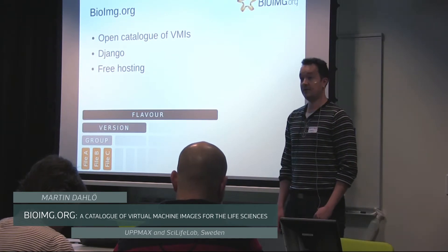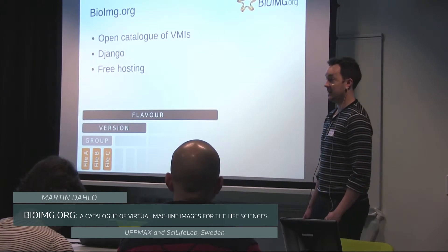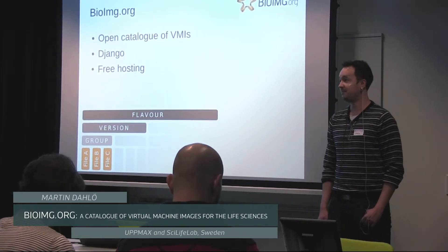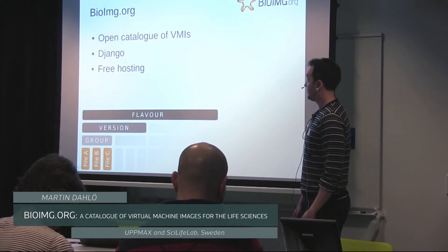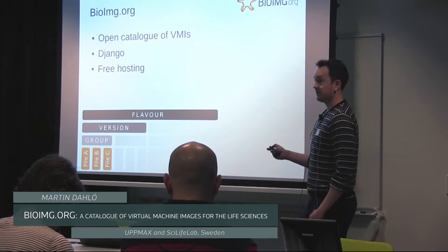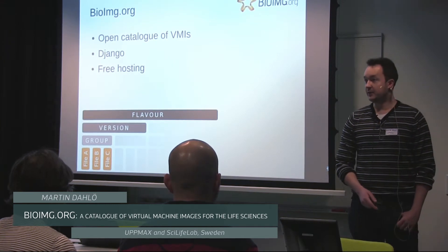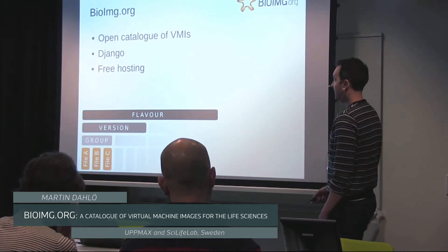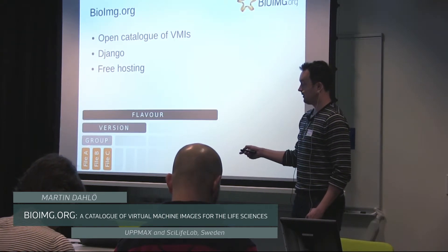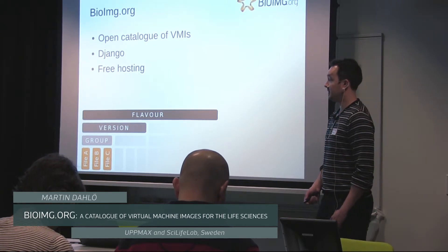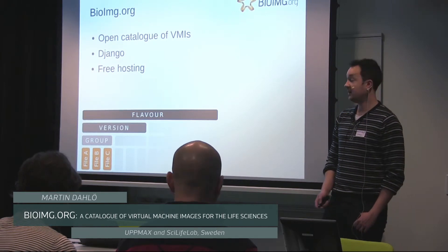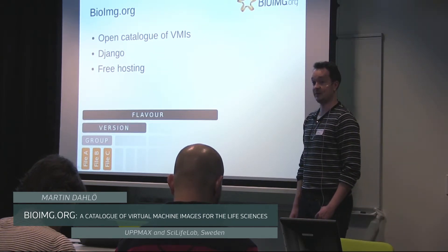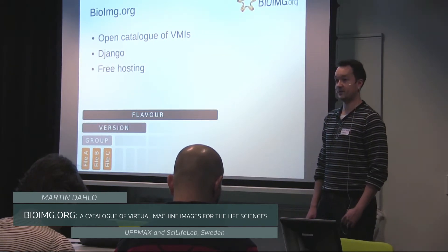It's just an open catalog for virtual machine images. Anyone can upload files, anyone can download files. It's structured around Django. We group everything by flavor — is it BioLinux? Is it Chipster? When you go into one of those categories, you can see different versions, maybe version 7.0 or 8.0 of BioLinux. From each version, we also have something called a group. It's called a group because it's completely up to the user what you want to name them — you might name them after the virtualization platform, so virtual box images, or supplementary files.